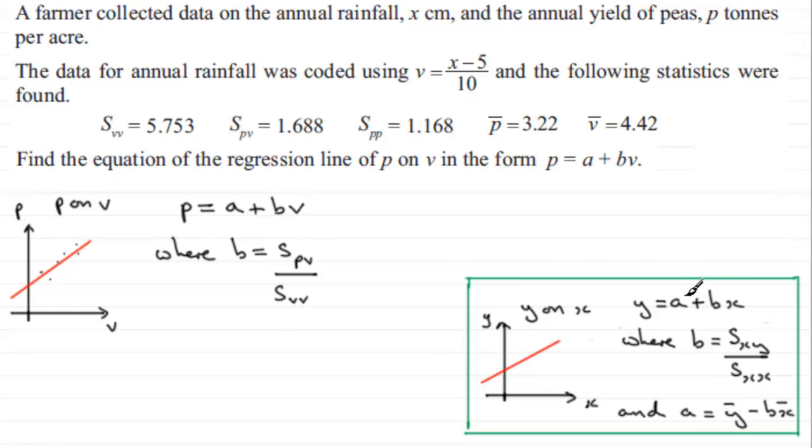But also when it comes to working out what a is, a was equal to y bar minus bx bar. But when we transfer it over to the new system, I'm going to say that a will be equal to, instead of y bar, it's going to be p bar, and then it's minus b times what was x bar is now v bar.